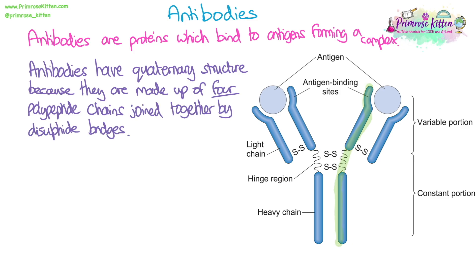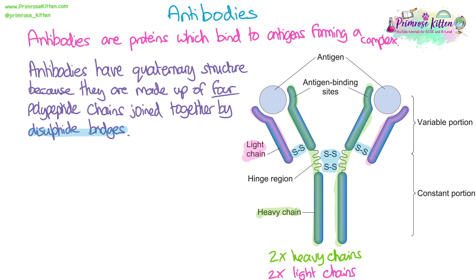There are two heavy chains — you can see them as the long ones in the middle — and then there are the two light chains. They're slightly shorter and on the outside. You can see the disulfide bridges joining them together: two joining the two heavy chains and one joining a light chain to one of the heavy chains.